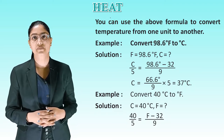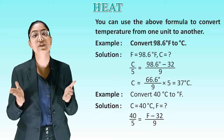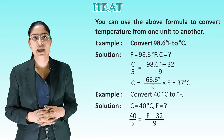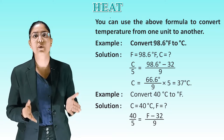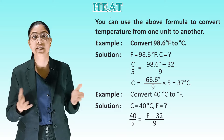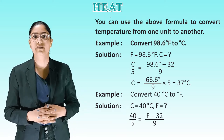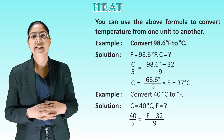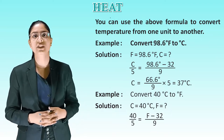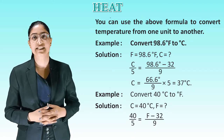Example: Convert 98.6 degree Fahrenheit to Celsius. Solution: F = 98.6°F. Using C/5 = (F − 32)/9, we get C/5 = (98.6 − 32)/9. So C = (66.6/9) × 5, which gives 37 degree Celsius.